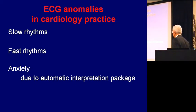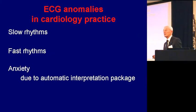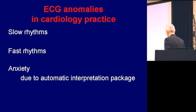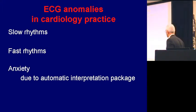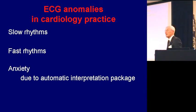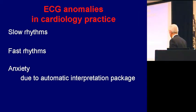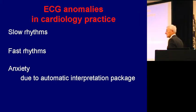What I see in daily practice is slow heart rhythms, fast heart rhythms, and a lot of anxiety due to the automated interpretation. The easiest to deal with are slow rhythms. The next easiest are fast rhythms, because basically, if your heart's going too slowly, it's usually due to drugs or disease. If it's disease, a pacemaker sorts it out. Fast rhythms can be real buggers to sort out sometimes, because it usually happens acutely.